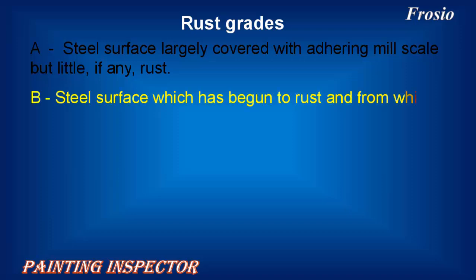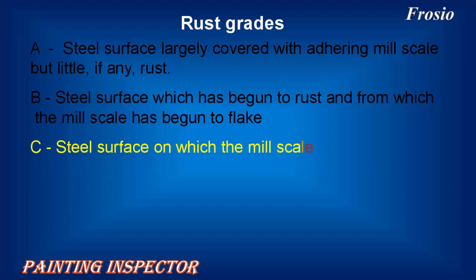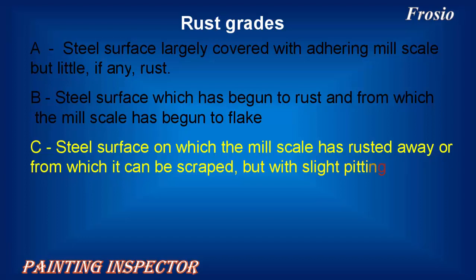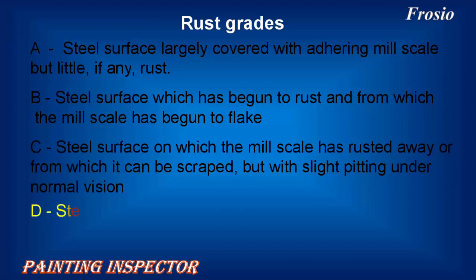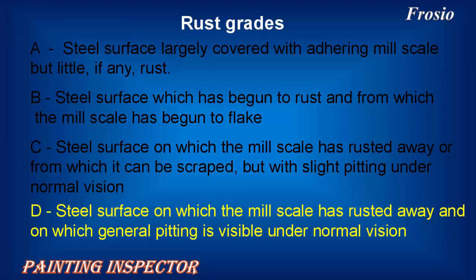Rust Grade C describes a steel surface on which the mill scale has rusted away, or from which it can be scraped, but with slight pitting visible under normal vision. Rust Grade D describes a steel surface on which the mill scale has rusted away and on which general pitting is visible under normal vision.